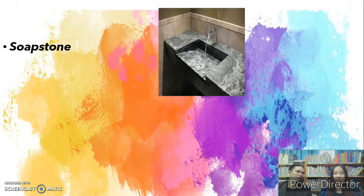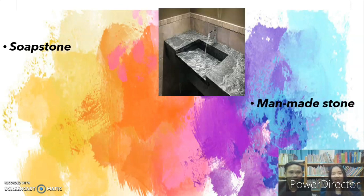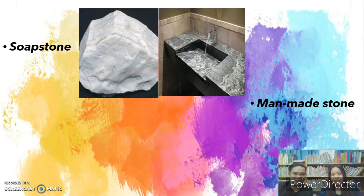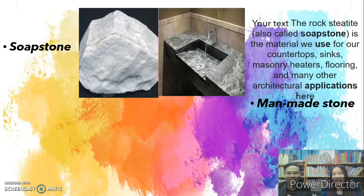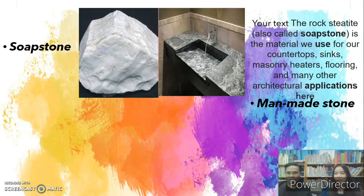Next is soft stone. The soft stone looks like a soap — you might think you can use it to take a bath, but it's a stone. You can use it to build sinks and houses. Soapstone, also called soft stone, is the material used for countertops, sinks, masonry heaters, flooring, and many other architectural applications.